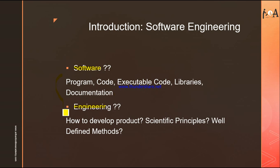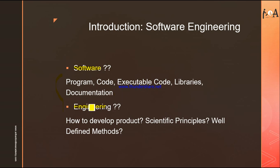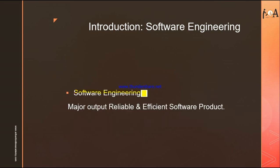Now let's discuss the term 'engineering' and how software and engineering are related to each other. Basically, how will you develop a product — a software product? What kind of scientific principles and methods will you apply so that the software you want to design will be reliable, efficient, and will work according to the user and the client? To design and work on those principles efficiently and reliably, so that the software product can be well maintained and operate well at the user end — this terminology is all covered under engineering.